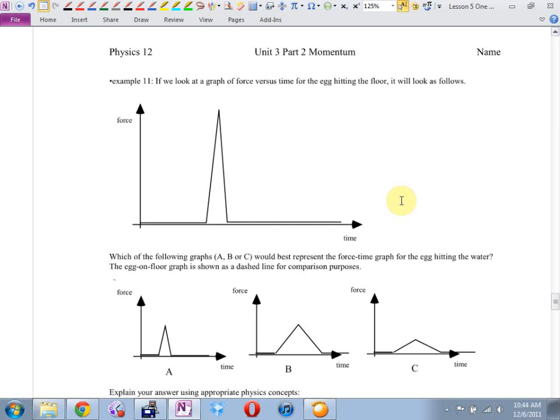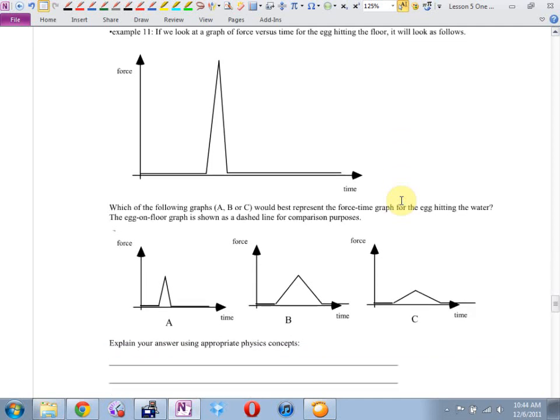Here's a good translating graph question. I told you you would start to see some of those. So if we look at a graph of force versus time for the egg hitting the floor, it'll probably look something like this. Which of the following graphs, A, B, or C, would best represent the force time graph for the egg hitting the water? And it says the egg on the floor graph is shown as a dashed line for comparison purposes. Did it appear on yours? Because it doesn't appear on my screen. Do you guys have a dotted line? Okay. So I think it would be something kind of like this.